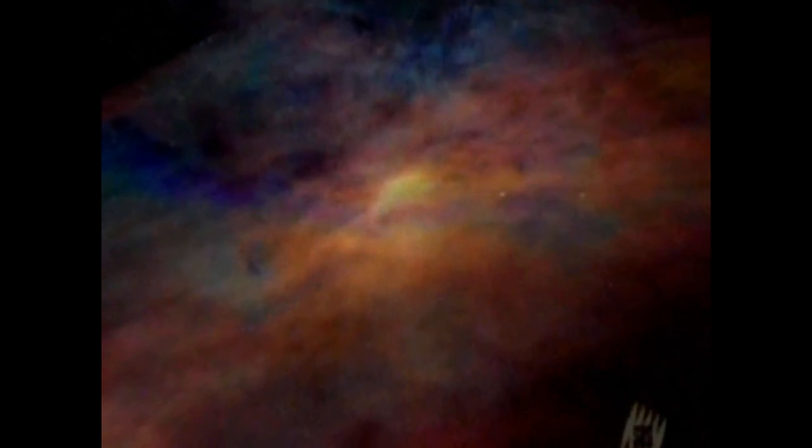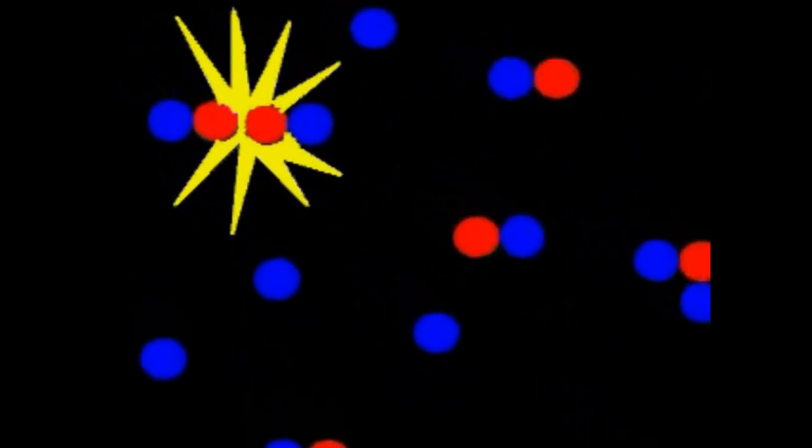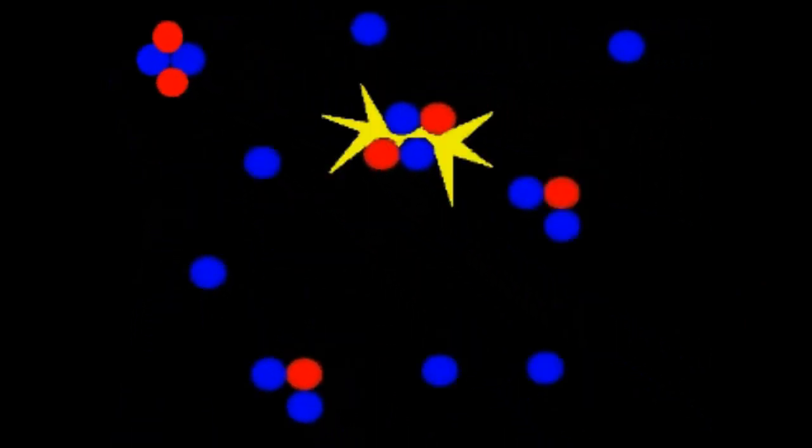Inside each ball of gas the pressure increased. Whenever a gas is compressed, it heats up. So hydrogen atoms in the center of the clouds started vibrating faster and faster, until they were crashing into each other at such high speed they began to fuse to form helium.